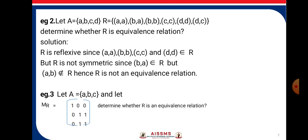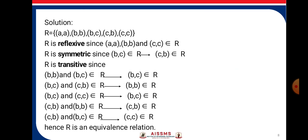Next example: set A has elements {A, B, C} and a relation matrix is given. We need to determine whether R is an equivalence relation. From the matrix, we write down the relation and get: {(A,A), (B,B), (B,C), (C,B), (C,C)}. R is reflexive since (A,A), (B,B), and (C,C) are present. R is symmetric since (B,C) is present in the relation and (C,B) is also present in the relation.